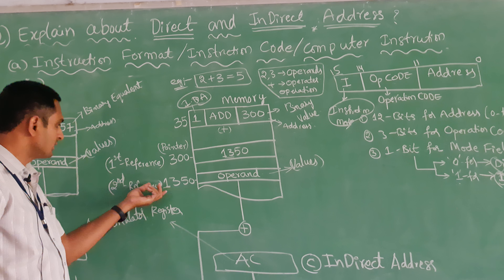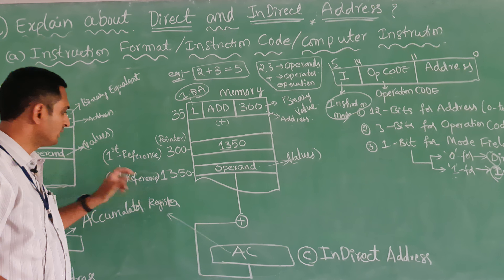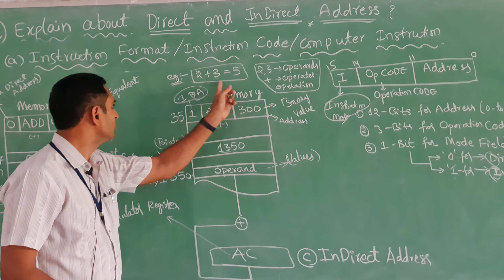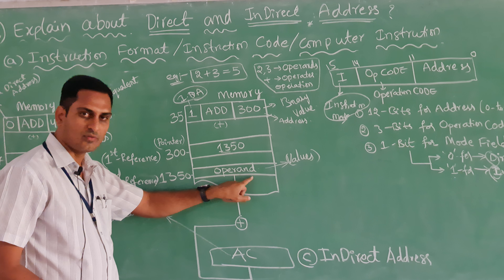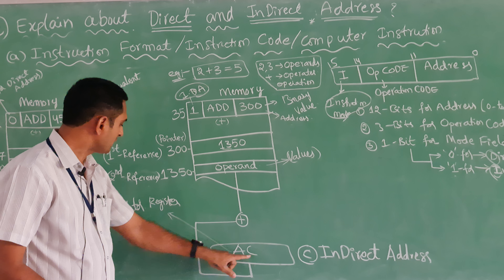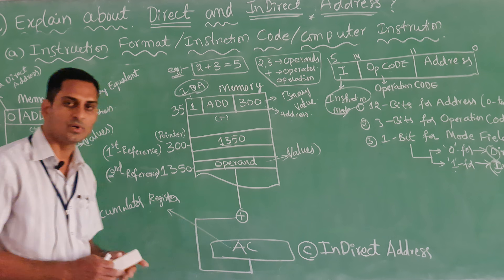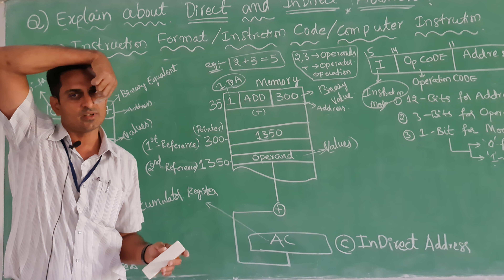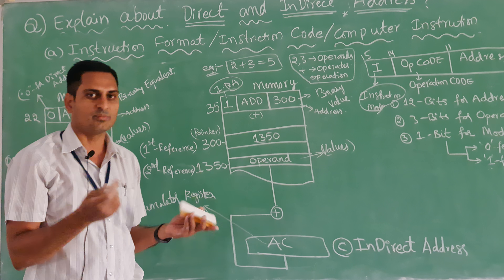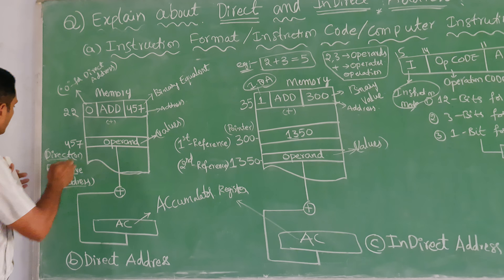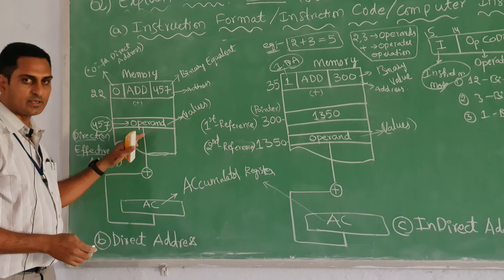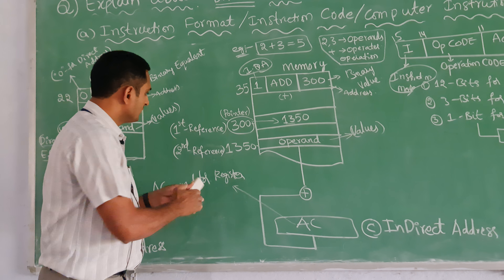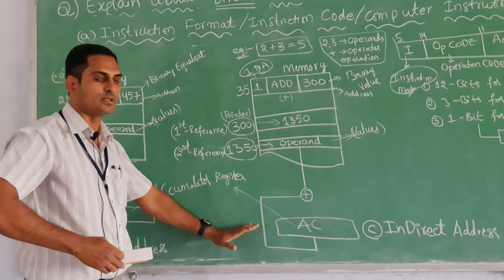That first reference 300 points to a second reference — for example 1350 — and at that second reference, the actual operand value is found. That value is then added and stored in the accumulator register. That is called indirect address. In direct address, the pointer goes straight to the operand. In indirect address, there is one extra level — a second reference — before reaching the operand.